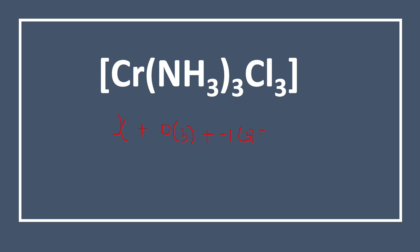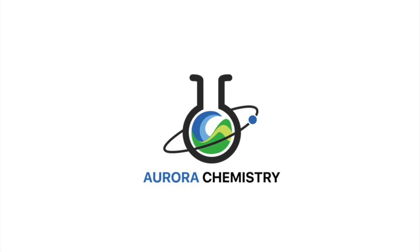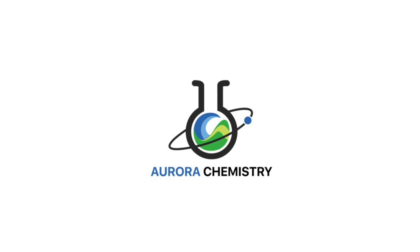The algebraic sum must be zero. So we write X plus 3 times 0 plus 3 times minus 1 equals zero, which gives X minus 3 equals zero. When minus 3 moves to the other side it becomes plus 3. So the oxidation number of chromium in Cr(NH₃)₃Cl₃ is plus 3.